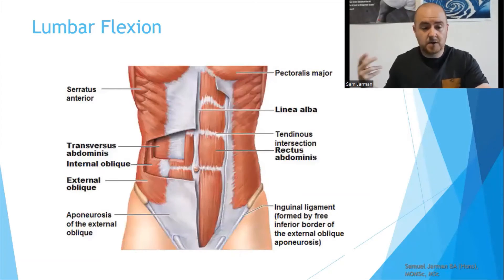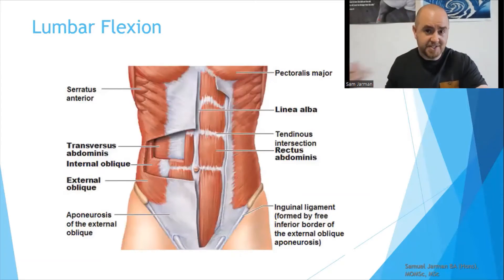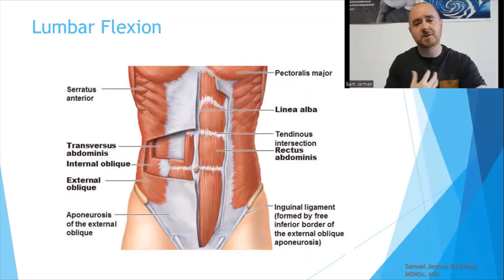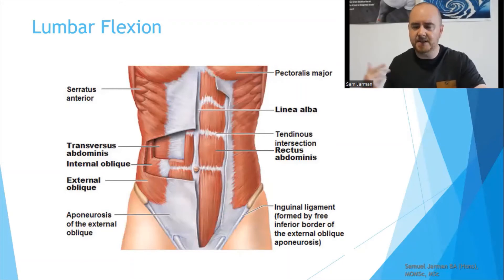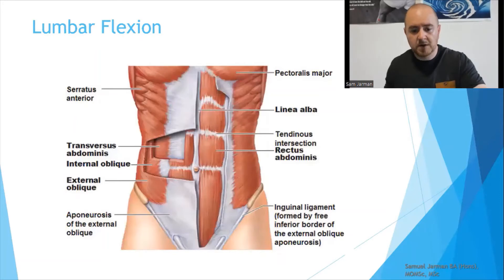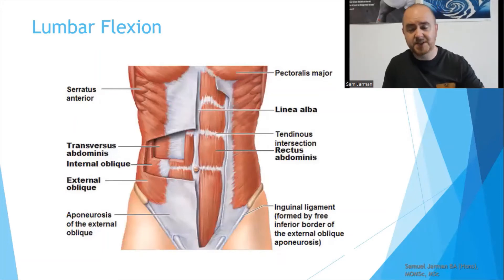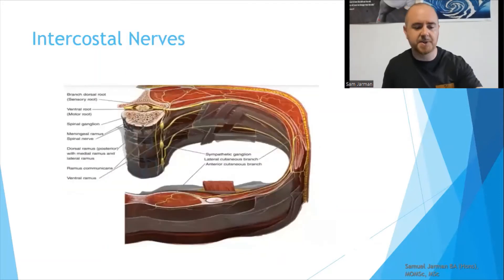The slide says lumbar flexion because pelvic flexion is lumbar flexion — you have approximation of the abdomen to the pubic symphysis or the front side of the pelvis. You're looking at the rectus abdominis and the internal and external obliques. The transverse abdominis isn't really going to do much here, and we've discussed this before with respect to lumbar flexion.